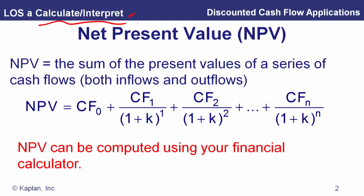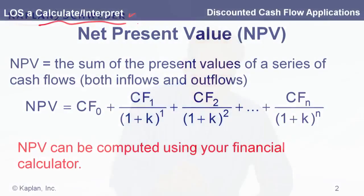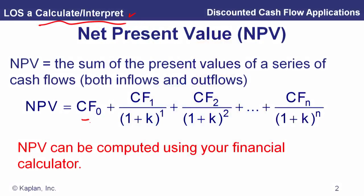What we have to calculate and interpret is net present value. The net present value is just the sum of the present values of a series of cash flows, both inflows and outflows. Typically we use this to evaluate a project, where the first cash flow is an outflow — like an investment in a factory or a machine — and then our future cash flows are what we expect to earn from that machine.